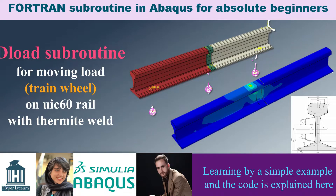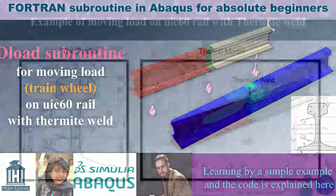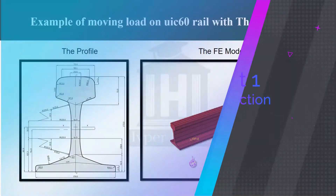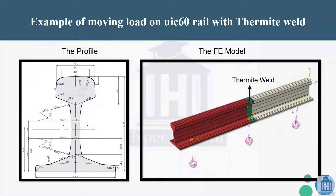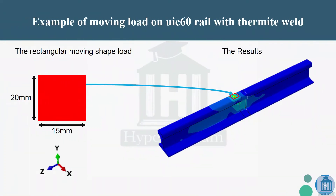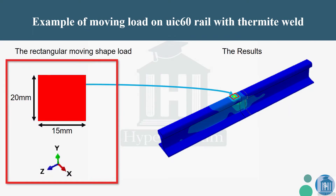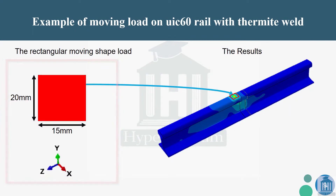In this process I'm going to use the DLOAD subroutine. In the past session slides you have seen the dimensions of the profiles. I'm going to simulate a moving load with the shape of a rectangle which has a length and width of 20 millimeters and 15 millimeters respectively. The two parts of the rail being used are attached to each other with thermite welding.